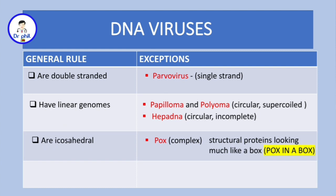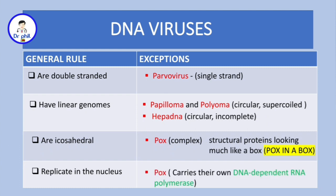Most of the DNA viruses replicate in the nucleus, and the exception again is pox. Pox virus actually carries its own DNA-dependent RNA polymerase, so it replicates in the cytoplasm. You can remember this by saying: pox out of the box — the box being the nucleus, so out of the box means out of the nucleus.